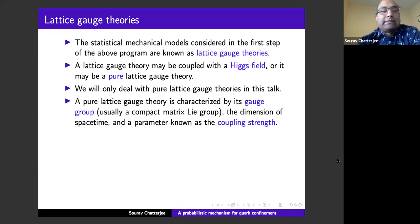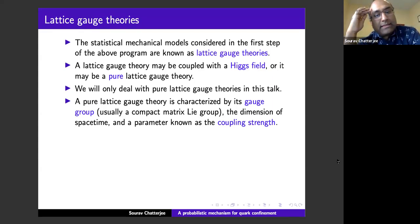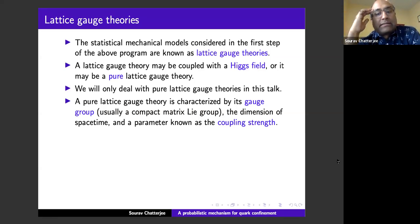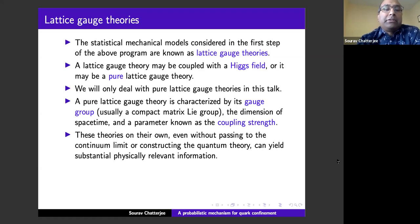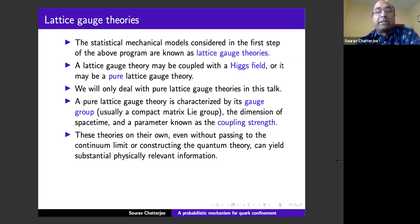Pure lattice gauge theory has various components. One is the gauge group — a compact matrix Lie group. There's also the dimension of space-time; the most important case is dimension four because our space-time is four-dimensional, and there's a parameter known as coupling strength. These theories, even without passing to a continuum limit, can yield physically relevant information.